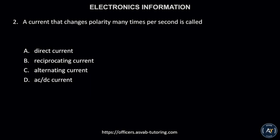Number 2. A current that changes polarity many times per second is called: A. Direct current, B. Reciprocated alternating current, C. Alternating current, or D. AC current.